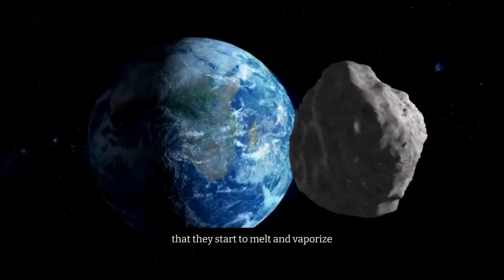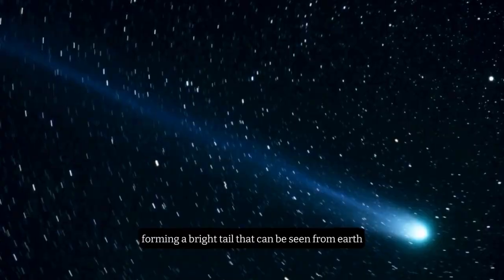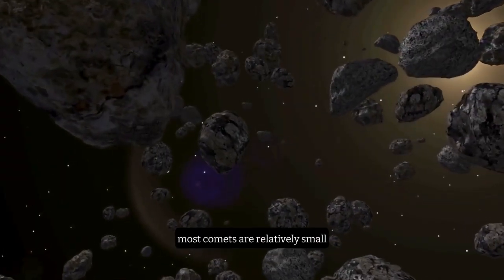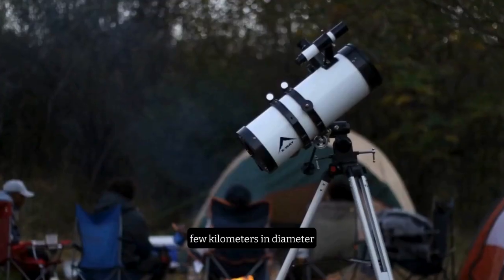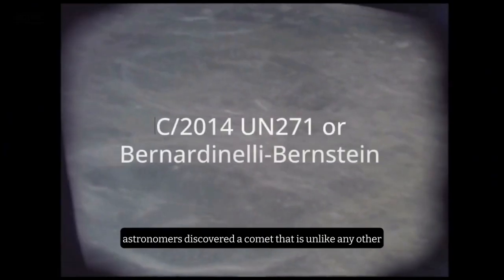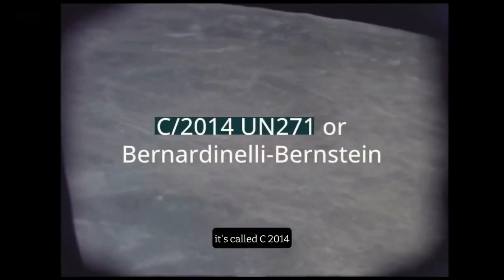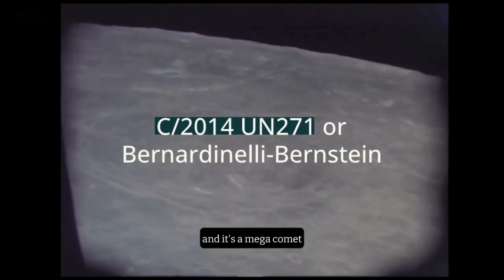Sometimes, comets can get close enough to the sun that they start to melt and vaporize, forming a bright tail that can be seen from Earth. Most comets are relatively small, ranging from a few meters to a few kilometers in diameter. But in 2021, astronomers discovered a comet that is unlike any other. It's called C/2014 UN271, or Bernardinelli-Bernstein, and it's a megacomet.